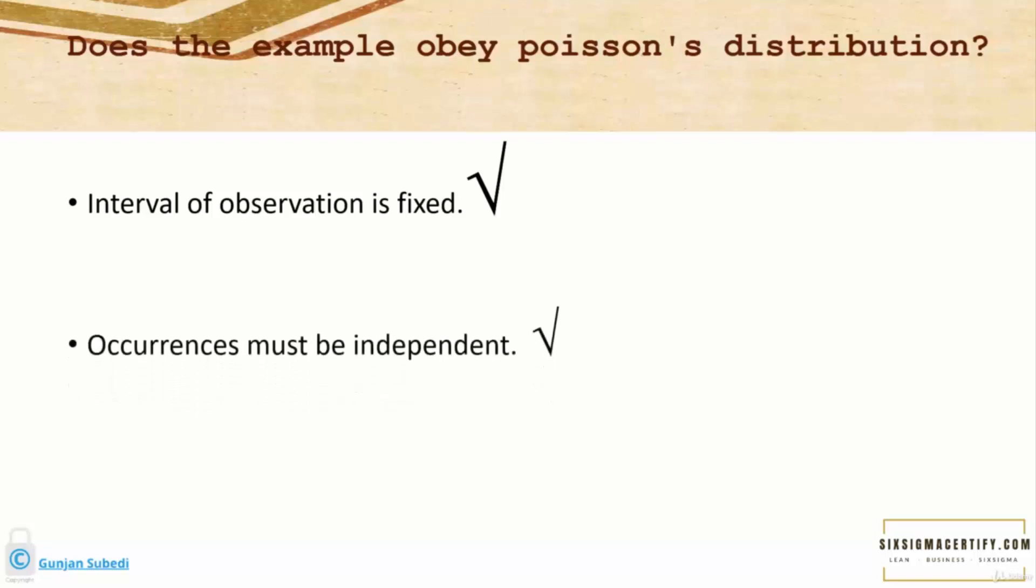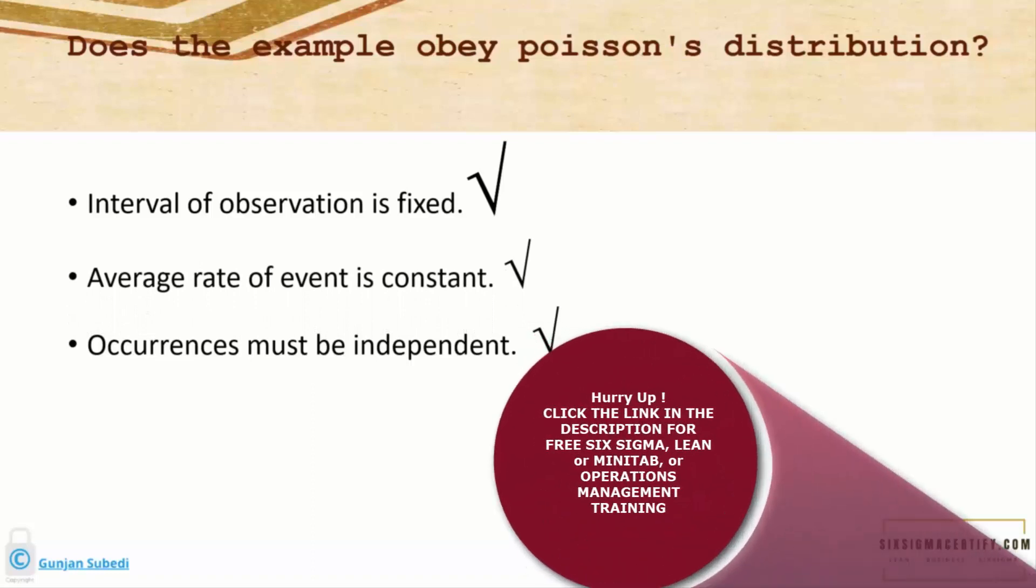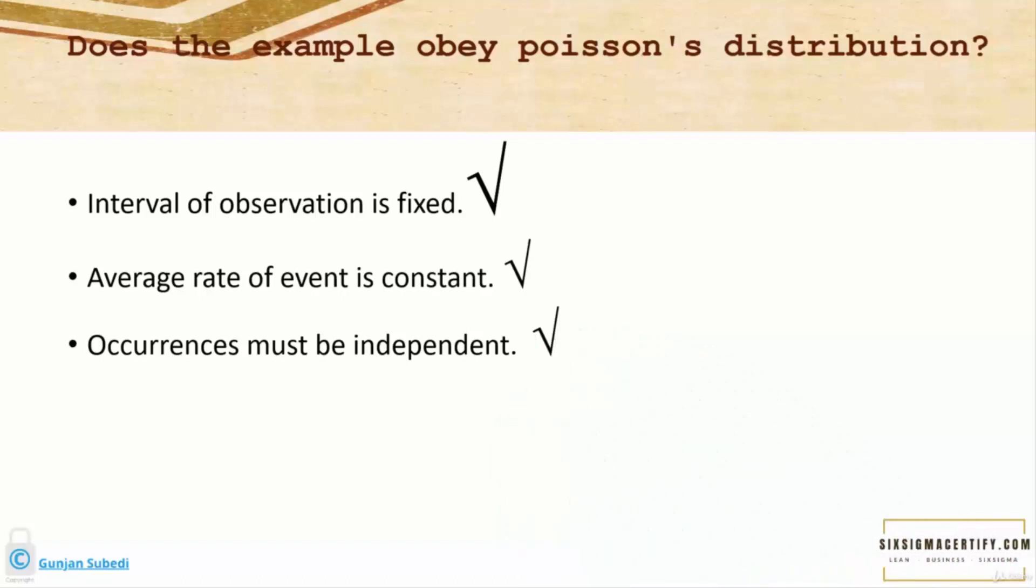Second, the occurrences must be independent. In our case, one air crash doesn't affect the other, so the occurrences are independent. The third parameter is that the average rate of event is constant. In our example, the mean is two crashes per year. So all these points obey the parameters for Poisson distribution.